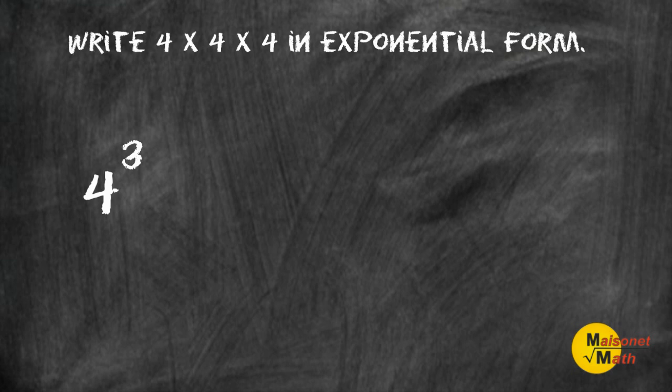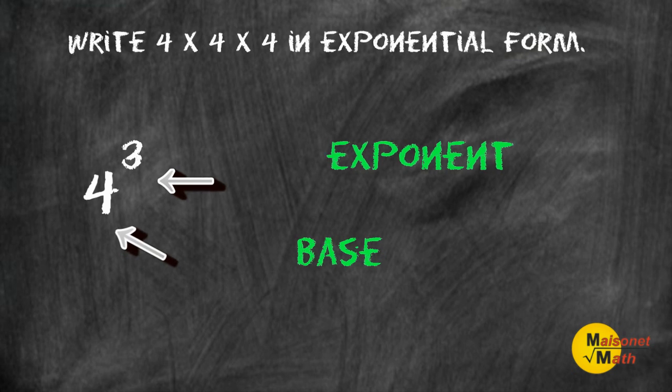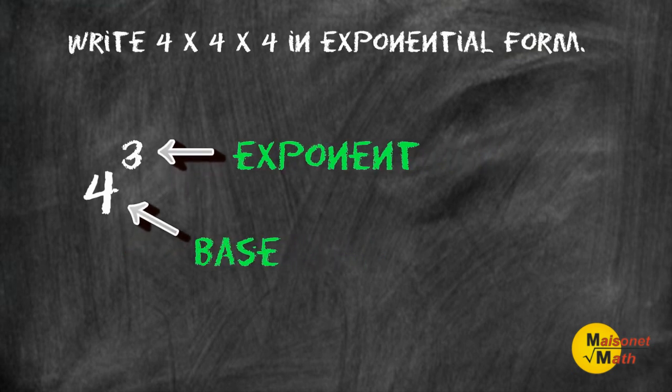So another way to write this would be 4 to the third power. The number that you are multiplying by itself is called the base, and the number of times that you multiply the number by itself is called the exponent.